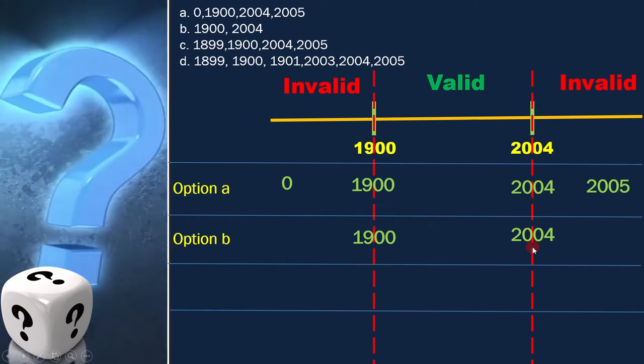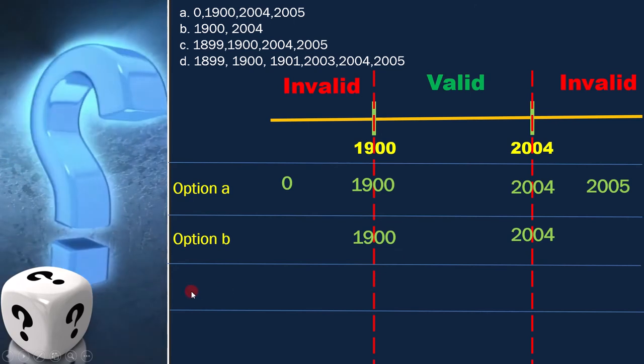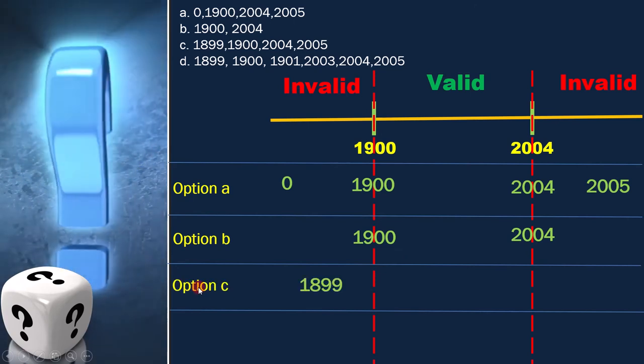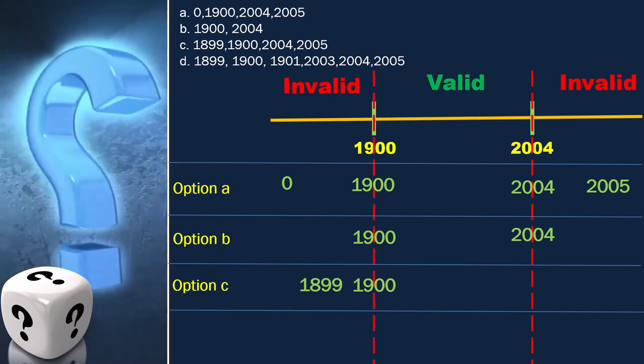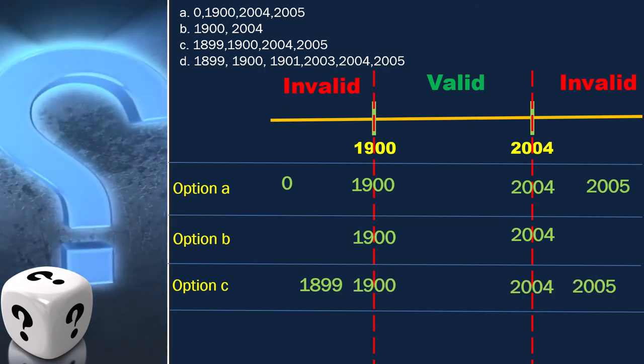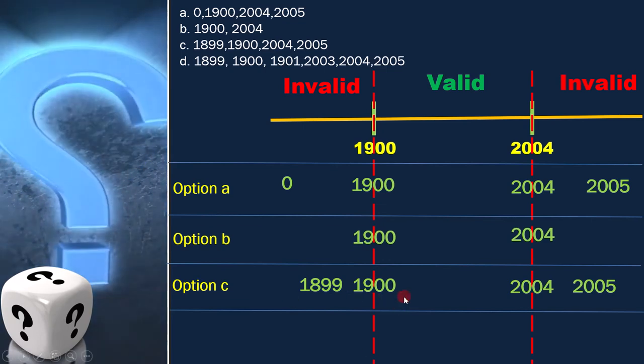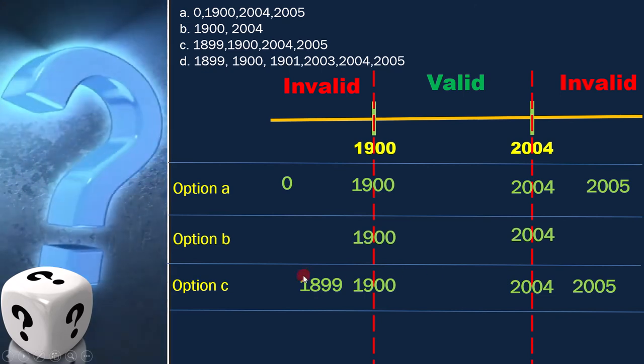Before discarding, let's look into the other two options. The third option is 1899, 1900, 2004, 2005. We can place it like this. This is a classic example of two-point boundary value analysis.